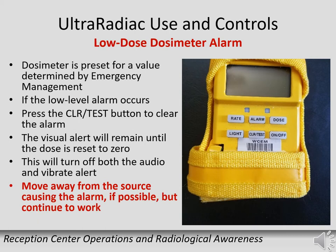The dose alarm has a low dose alarm setting. If the dosimeter reaches this value, the unit will alarm with vibration, visual, and audible alerts. Press the clear test button to reset the audible and vibration alert; the visual will remain lit until the dose is reset to zero. If the low dose alarm occurs, move away from the source if possible and continue to work.